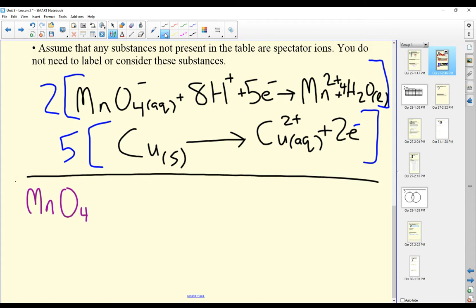We get MnO4- aqueous. Make sure to put a 2 because I multiplied it by 2. Plus 2 times 8, which is 16 H+.